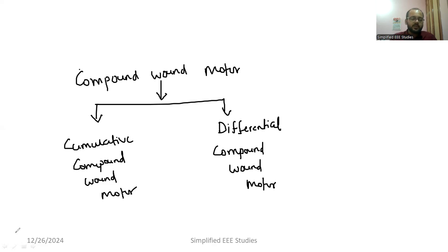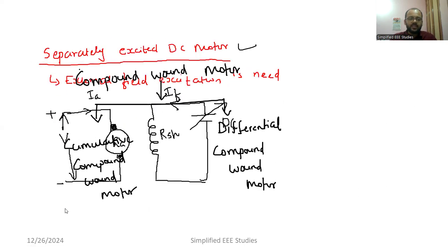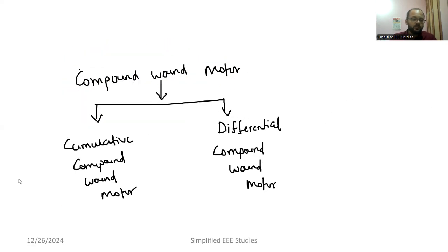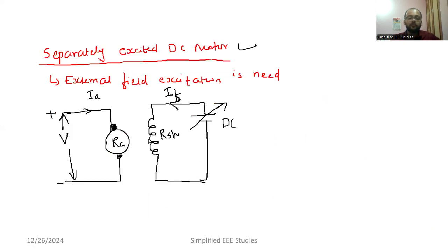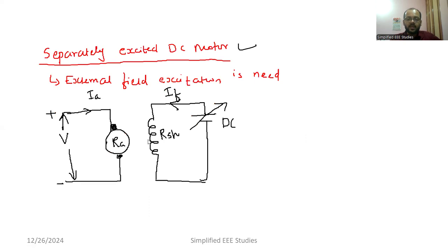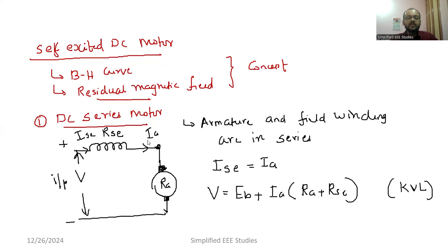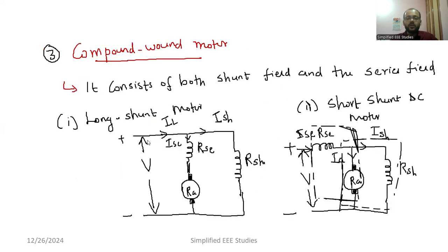In this session, we discussed the entire classification of DC motors — separately excited DC motor and self-excited DC motor, including the pros and cons of each. We discussed the separately excited DC motor with a connection diagram, and the self-excited DC motor types: series motor, shunt motor, and compound motor, along with the basic mathematical equations needed to solve numerical examples. Thank you for watching. Put your queries in the comment box — happy learning, have a great day, and like, draw, and practice.